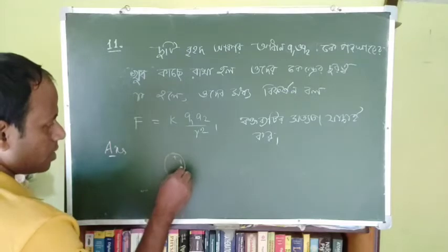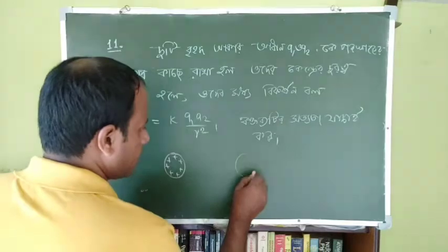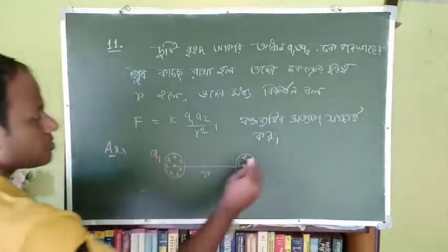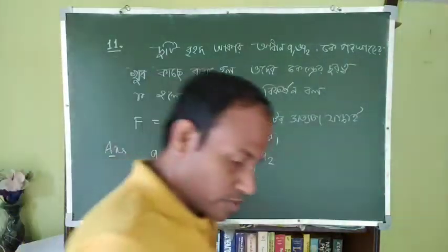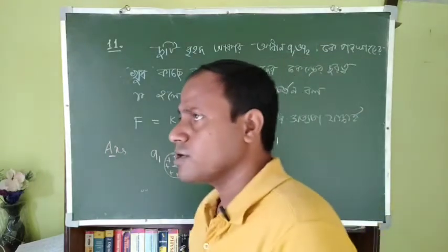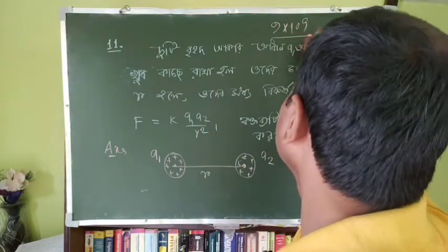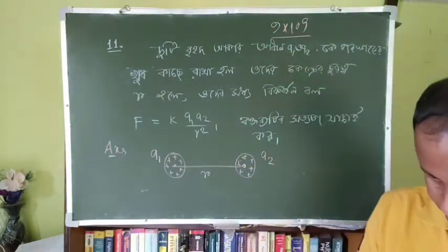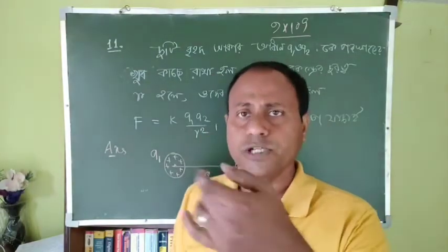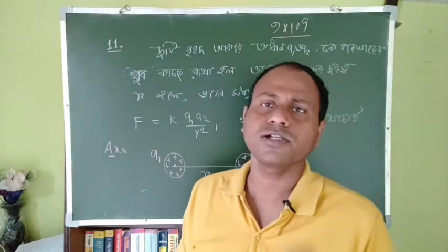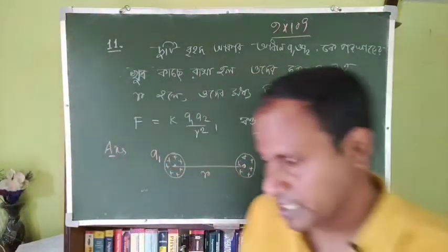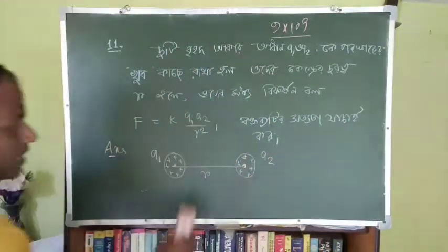The next problem involves two charges q₁ and q₂ placed at a distance. Using Coulomb's law: F = KQ₁Q₂/r². The value of K is 9×10⁹ Nm²/C². Setting up the calculation with the given charges and distance, we proceed to compute the force between them.